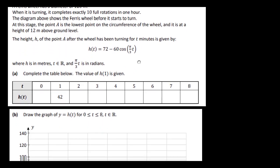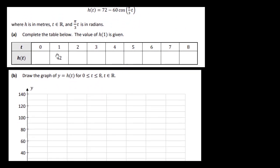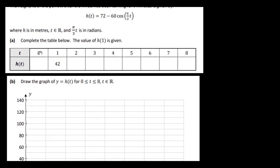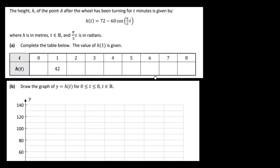We need to complete the table to find each of the h values; one of them has already been done. All we do is substitute t = 0, 1, 2, and so on into the formula. For t = 0, cos(0) = 1, so 72 minus 60 gives us 12. For t = 2, we get 2π/3.